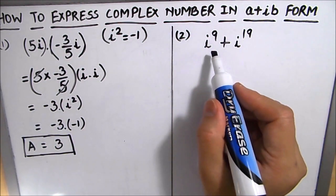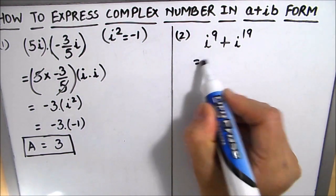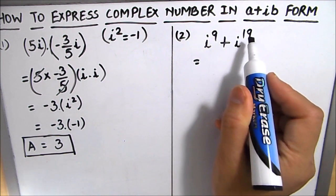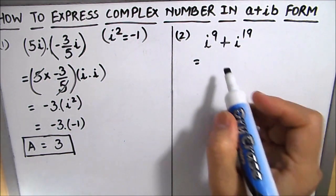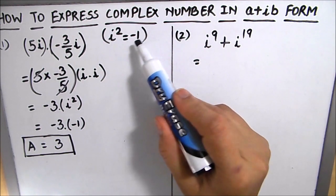Let's move on to our second example, which is iota to the power 9 plus iota to the power 19. So as we know that iota square is minus 1.